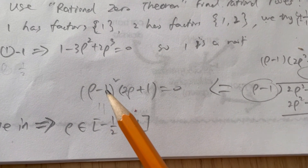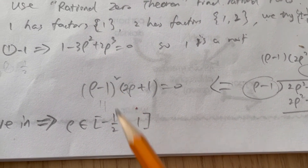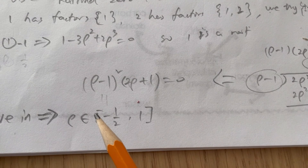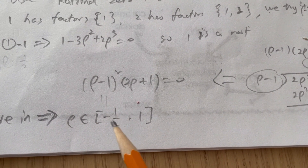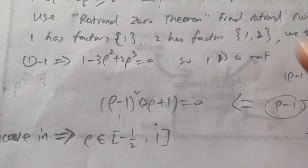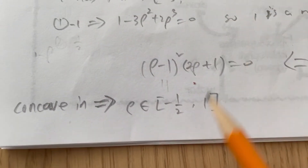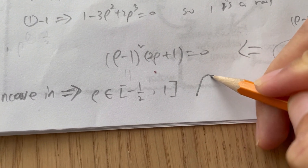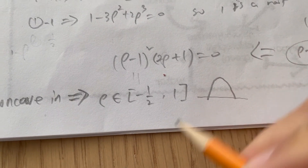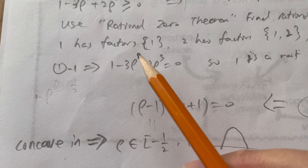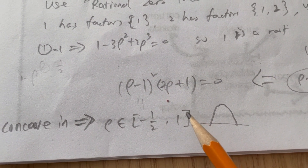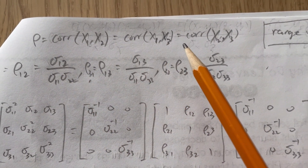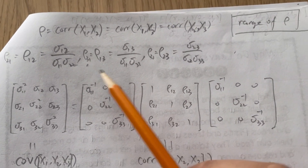We have two intervals to consider: from -1 to -1/2, and from -1/2 to 1. Taking the derivative of the polynomial, we see that between -1/2 and 1 the function is concave and stays above zero. Therefore, in order for the polynomial to be greater than or equal to zero, rho must be between -1/2 and 1. So the valid range of rho is [-1/2, 1]. That's our answer — thank you everyone.